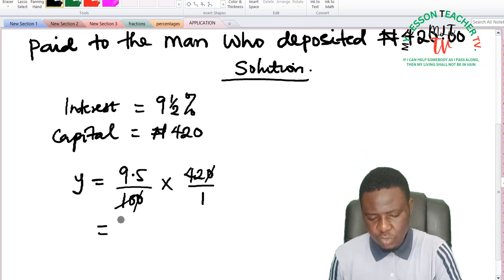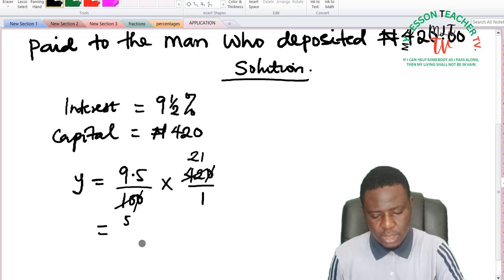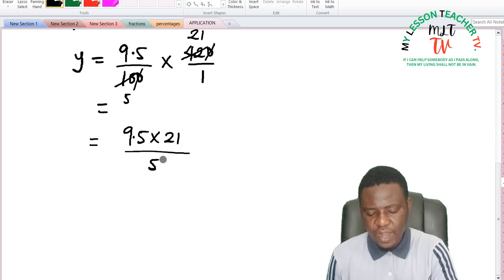2 can divide, 2 into 10 is 5, 2 into 42 is 21. So that this is equal to 9.5 times 21 divided by 5.